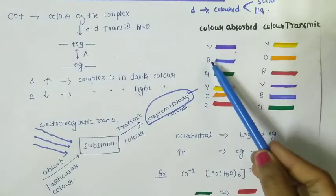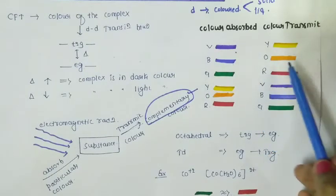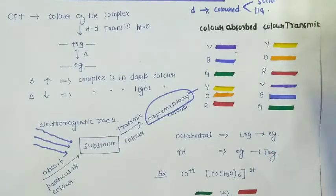Here are the complementary color pairs: violet absorbs yellow and transmits violet; blue absorbs and transmits orange; green transmits red; yellow transmits violet; orange transmits blue; and red transmits green.